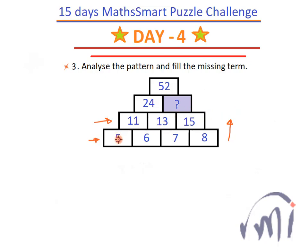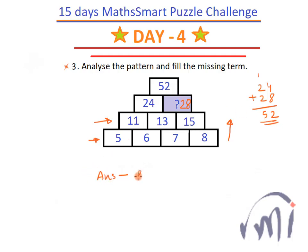If I see 5 and 6 and add them up, it gives me 11. 6 plus 7 gives me 13, and 7 plus 8 gives me 15. And here 11 plus 13 gives me 24. So if I add 13 and 15, which gives me 28, this should be the answer for the question mark. Let me check: 24 plus 28 — 8 plus 4 is 12, carry 1; 2 plus 2 is 4 plus 1 is 5 — this gives me 52. That means the answer for this puzzle is 28.